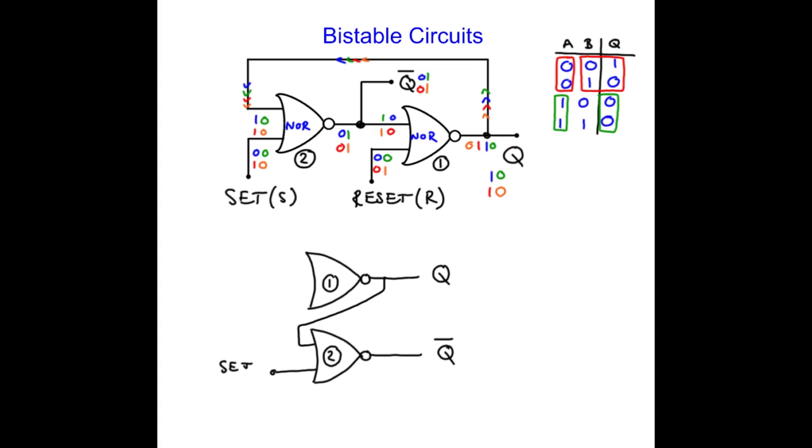The output from here, the q bar output, the output from NOR gate number 2 is fed back into NOR gate number 1 and sits alongside the reset. So that is an alternative way of drawing the NOR gate bistable. Convince yourself that works.